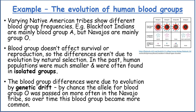Varied Native American tribes show different blood group frequencies — for example, the Blackfoot Indians are mainly blood group A, but the Navajos are mainly group O. Blood group doesn't affect survival or reproduction, so the differences aren't due to evolution by natural selection. In the past, human populations were much smaller and were often found in isolated groups, so the blood group differences were due to genetic drift. By chance, the allele for blood group O was passed on more often in the Navajo tribe, so over time this blood group became more common.